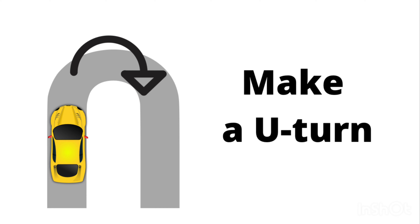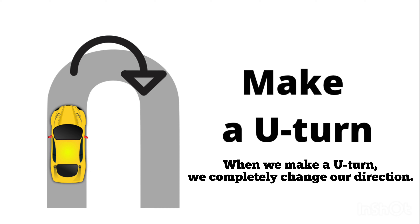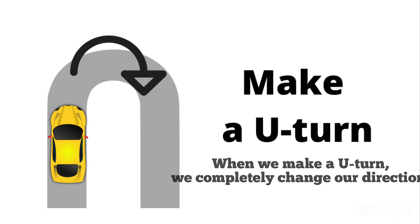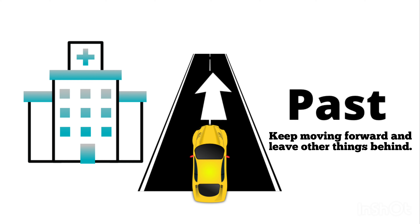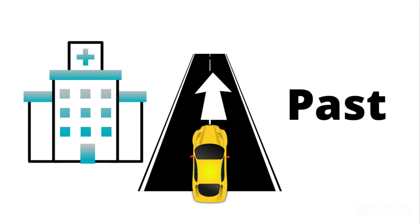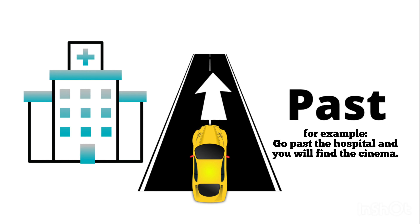The next one is make a U-turn. If you look at the picture, the meaning is clear — when you make a U-turn, you completely change your direction. For example: you don't have to drive fast when you want to make a U-turn. The next one is pass — when you are passing something, you keep moving forward and leave that thing behind. As you can see, this yellow car is passing the hospital. For example: go past the hospital and you will find the cinema.